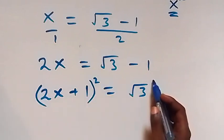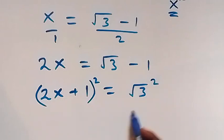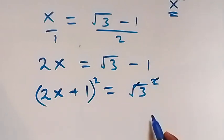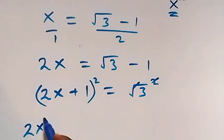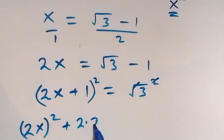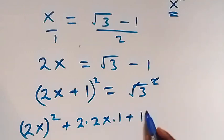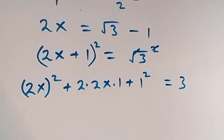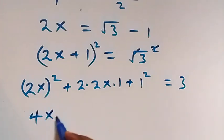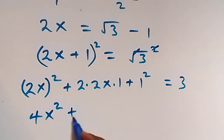From here the next step is to square both sides. We have everything squared. On the left side the square cancels the square root to remain 3, and on the right side we expand: (2x + 1)² gives us (2x)² plus 2 times 2x times 1 plus 1².